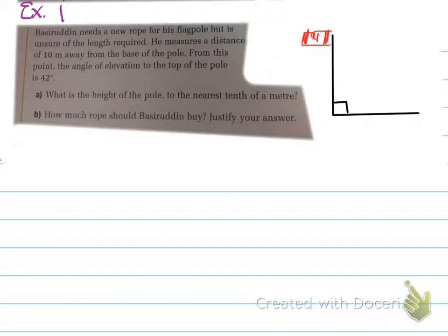So here's our flagpole, and there's the ground, and at a right angle is the height of the flagpole. And what you're doing is from some 10 meters away from the base of the pole, there's a 42 degree angle of elevation to the top of the pole. So 42 degrees is the angle known as the angle of elevation. What is the length of the pole to the nearest meter? So we're going to find the height of this pole first, and that's what it wants. And the second question says, how much rope, that would be R, should Bazzi buy and justify your answer.